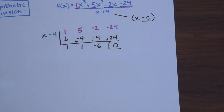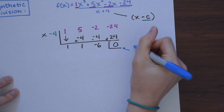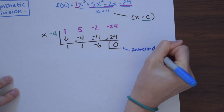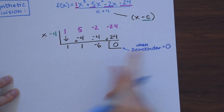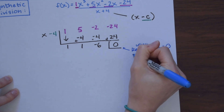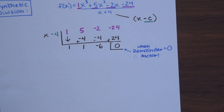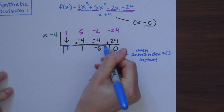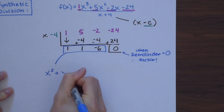Something interesting — notice we get a 0 here. The last number on the right when you do synthetic division is always the remainder. When the remainder equals 0, that means x + 4 is a factor of this polynomial: x³ + 5x² − 2x − 24.